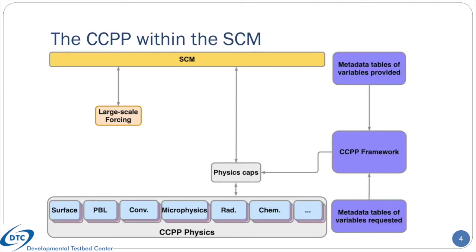One of the aspects that makes this particular single-column model unique is its use of the CCPP, which is illustrated here. In this diagram, the SCM box represents the main calling program. It is responsible for time integration, setting up the vertical coordinate, calling all I/O routines, and maintaining the model's state. There is another software layer that handles the application of large-scale forcing, which one can logically think of as a data component. The CCPP physics on this diagram corresponds to the CCPP physics repository and is a collection of physics parameterizations with potentially more than one of each type.